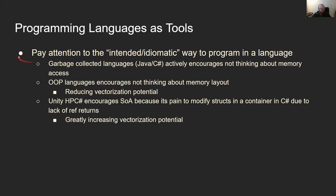You should really pay attention to the intended or idiomatic way of writing in a language. Garbage-collected languages like Java and C# actively encourage you not to think about memory access — which can make it hard to optimize for memory access if that's a problem you actually have. Object-oriented programming languages in general encourage not thinking about optimal memory layouts, which greatly reduces vectorization potential.